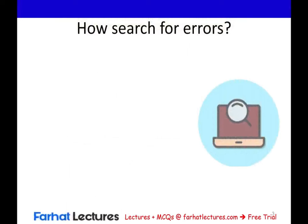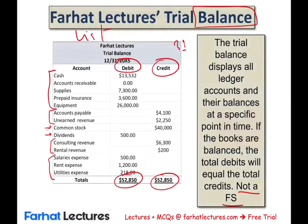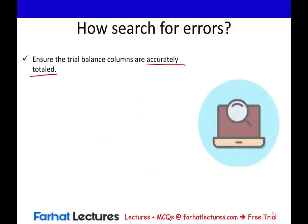How do you search for errors if the trial balance does not balance? In the real world, if you are using software, most software does not allow you to input a transaction where debits are not equal to credits, so if all transactions have debits equal to credits the trial balance will balance. But if you are using a manual system, first ensure the trial balance columns are accurately totaled — make sure you add them up properly. Often we use Excel for this.